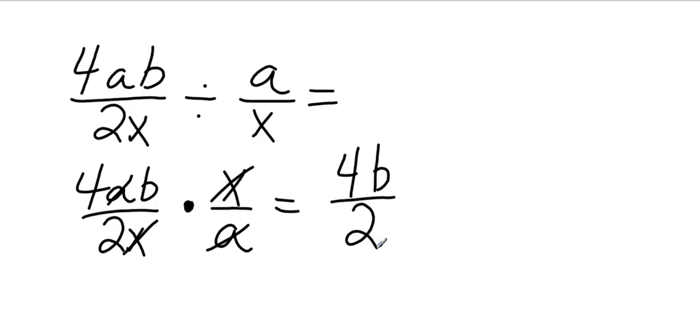Now I missed a canceling step because I focused on the variables and not the numbers. That 2 will actually divide into that 4 twice, giving me a final answer of 2b. Or not 2b. That is the question.